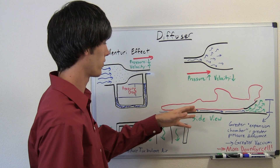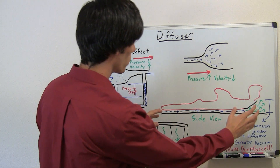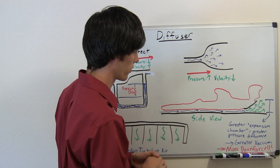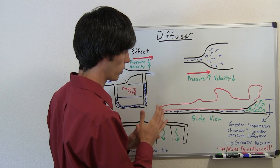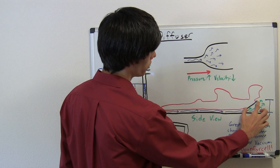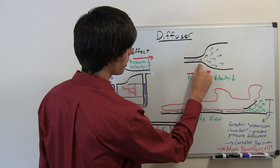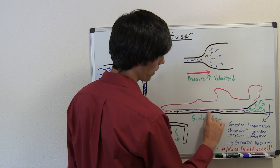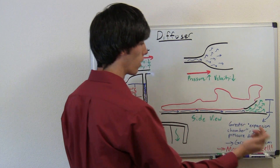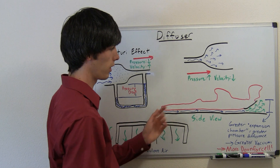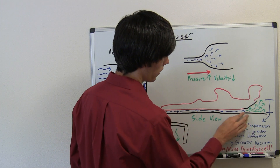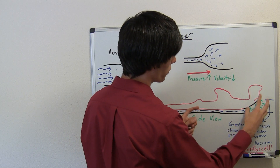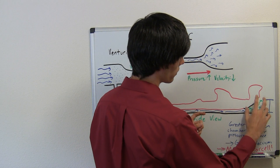So how does this help with a car? Here we've got a side view of a Formula One car without tires, to make it easier to visualize. At the back we've got the diffuser. There is very low pressure, very high speed air moving underneath the car because the car is moving at a very fast pace. Behind the car you've got your diffuser, which allows the air's pressure to increase and its velocity to decrease.